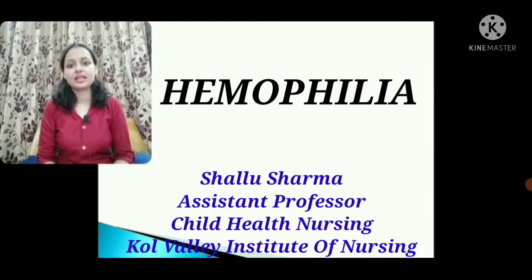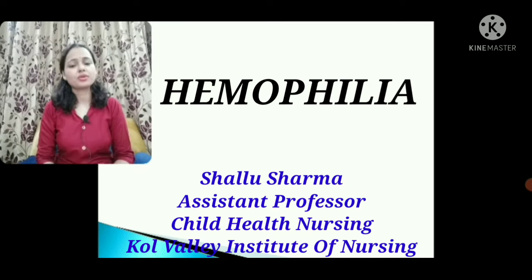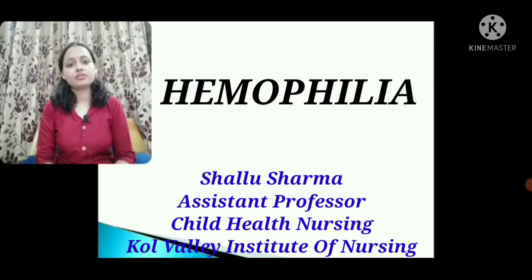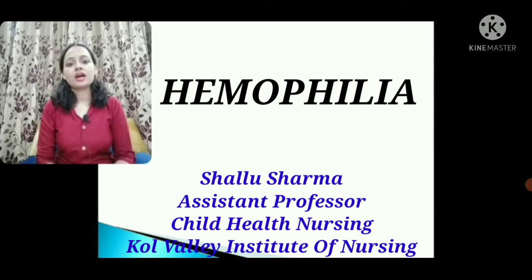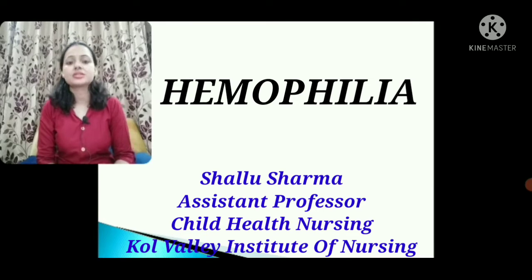Basically, as the name indicates, hemophilia is a blood disorder. In our body there are different clotting factors, and in hemophilia, any one of these clotting factors may be missing or deficient. That deficiency leads to a specific type of hemophilia. If a clotting factor is missing due to a genetic reason, blood coagulation does not occur properly in the body.